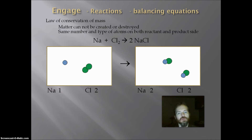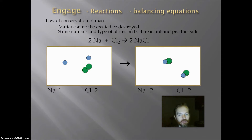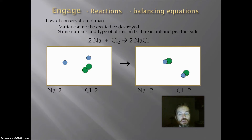If I do that, I now have two sodiums and two chlorines on the product side, so the chlorines now balance. But now the sodiums don't balance. In order to fix that, I am going to add one more sodium on the reactant side, which gives me a grand total of two sodiums altogether. So my reaction of 2Na plus Cl2 yielding two NaCl now follows the law of conservation of mass.